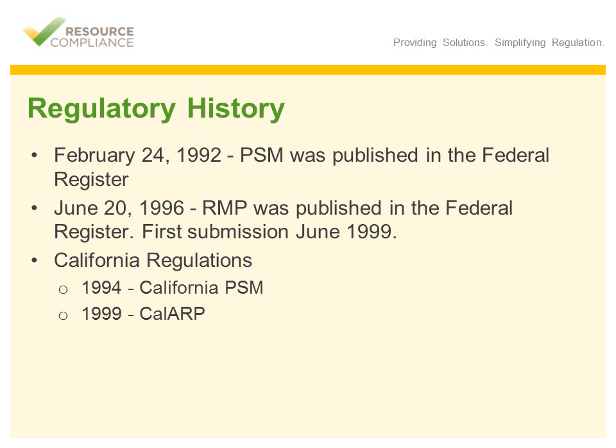Here's a little history for facilities located in California. In 1994, California adopted its own PSM standard, and then in 1999, the California Accidental Release Prevention, or CalARP Program, became law. CalARP is very similar to the Federal RMP, except that the list of applicable chemicals is longer and the threshold quantities are smaller. That's a fly-by summary of the process safety events and regulations that bring us into this century.